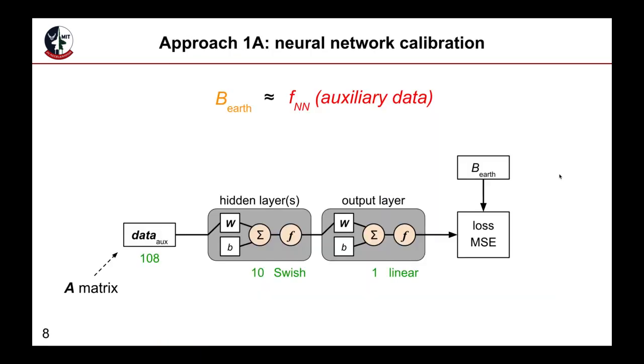The first approach is to replace the calibration model with a neural network. Here, the training data contains the physics-based Tolles-Lawson A matrix, as was described earlier, as well as additional sensor data, meaning that more observables are provided to the calibration model. This also means that there are potentially more relationships that can be exploited in this calibration model.